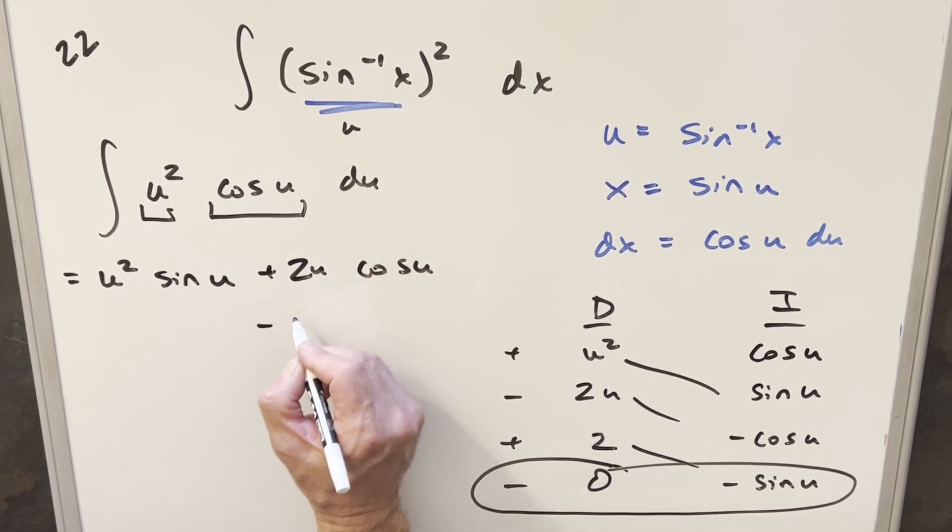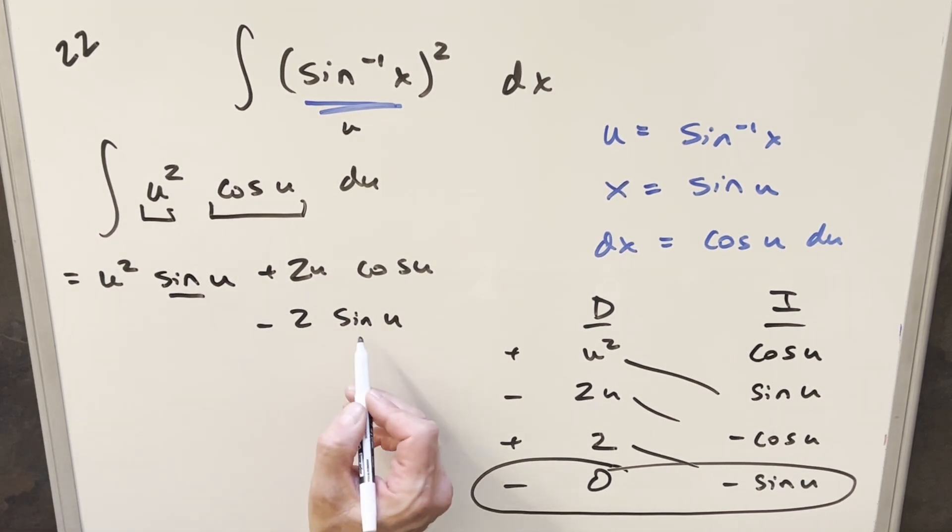And for the last one, we're going to have minus 2 sine of u. And actually, we've got the sine u in common here and here. So let's group these together. We can write this as u squared minus 2 sine u.